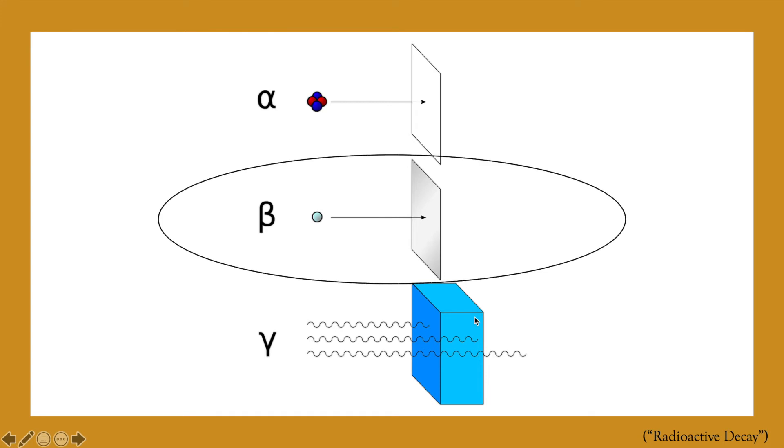Beta particles are more dangerous than alpha particles, but can be stopped by a thin aluminum plate.